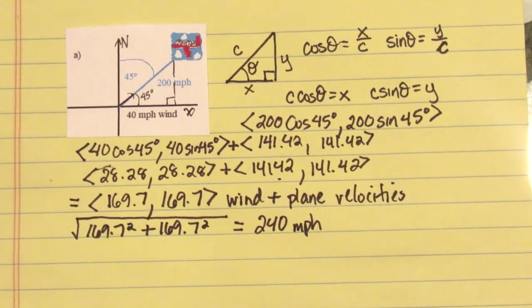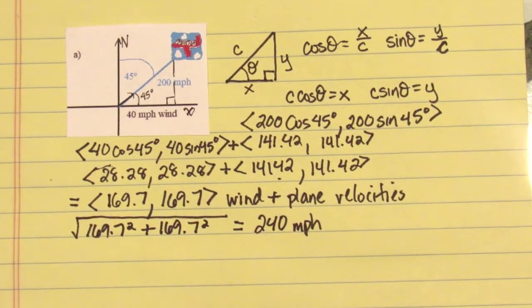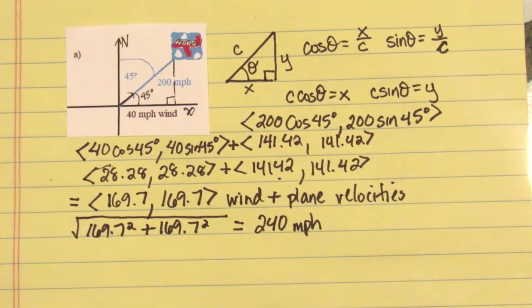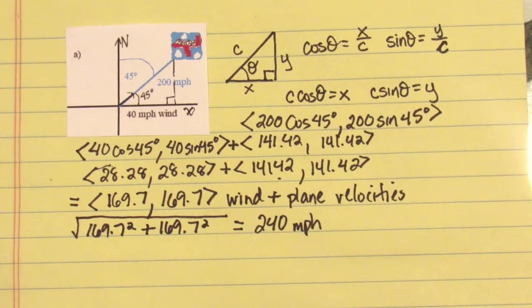In this episode of remote trigonometry, we'll be looking at some basic physics examples of how vectors work. Here we have an airplane flying in a northeast direction with a heading of 45 degrees.